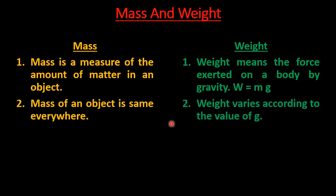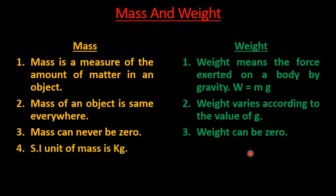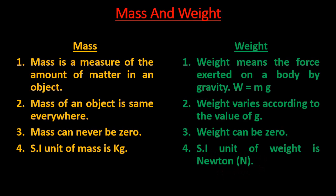Since mass is constant and only gravitational acceleration varies, weight is not the same everywhere. Mass can never be zero — it is always a positive quantity greater than zero. But weight can be zero: if gravitational acceleration is zero, then the weight of the object will also be zero. The SI unit of mass is kg, while the SI unit of weight is Newton, which is also the SI unit of force.